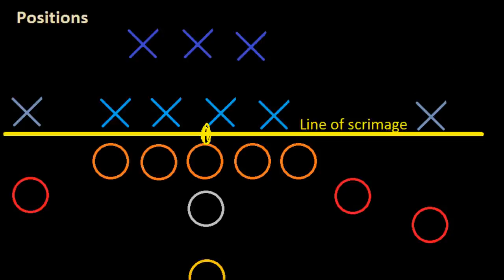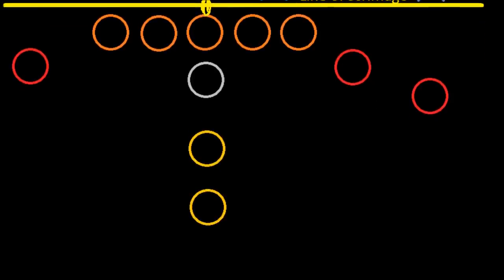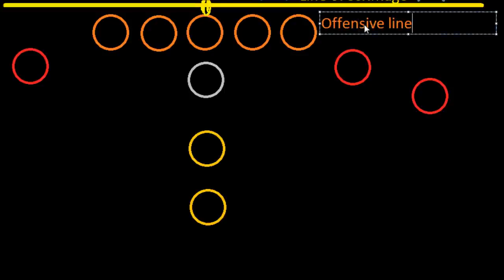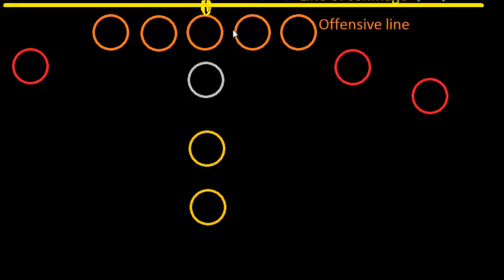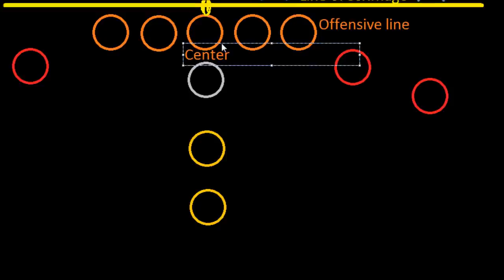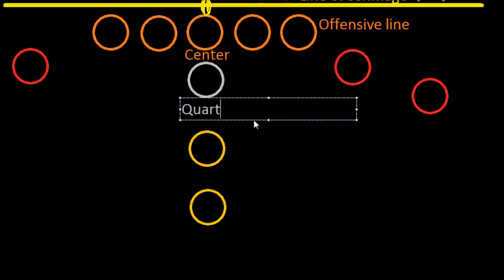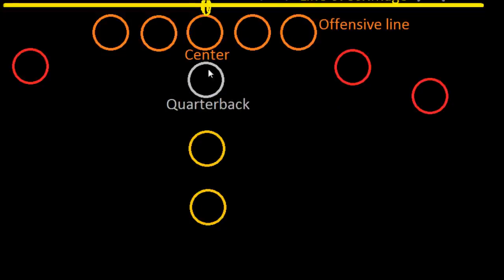Let's take a look at the guys on offense. The offense starts with the offensive line — these five players here. The man in the middle is, fittingly, called the center, and the center is the man who snaps the ball back to the quarterback. The quarterback is the gray guy standing right behind the center.